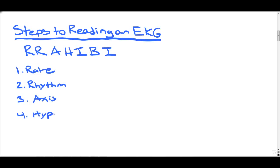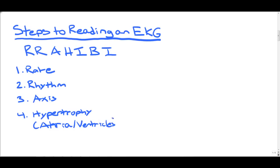The fourth thing I look for is Hypertrophy — both Atrial Enlargement (Left, Right, or Bi-Atrial) and Ventricular Hypertrophy (Left or Right). That can tell you a lot about the physiology of what's going on in the heart — does the patient have COPD, did they have a PE, what's actually going on?